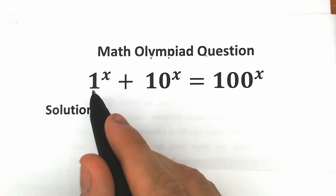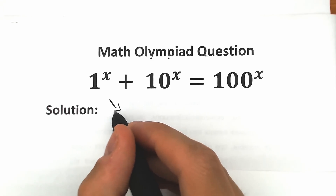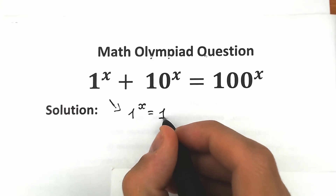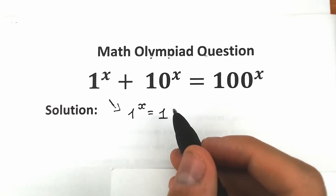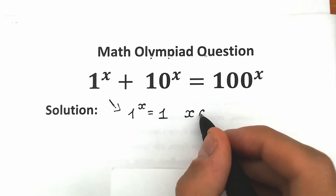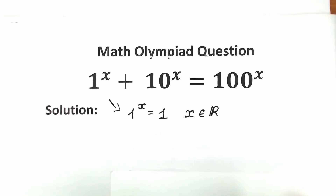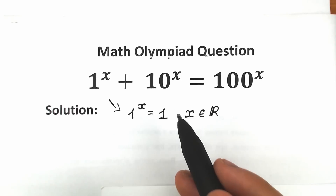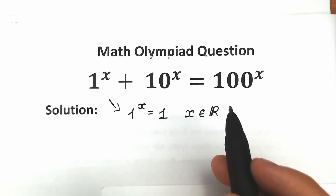First of all, we have 1 to the power x, and every student should know that no matter what we have on the right side, 1 to the power x equals 1. We do know about infinity, but in terms of school knowledge it's enough for us. So 1 to the power x equals 1 when x is in the set of real numbers.